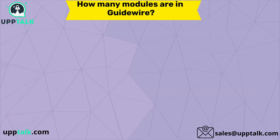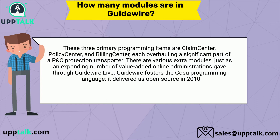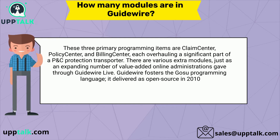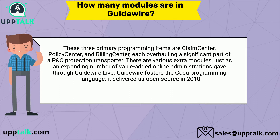How many modules are in Guidewire? The three primary modules are Claim Center, Policy Center, and Billing Center, each serving a significant part of a P&C insurance carrier. There are also various extra modules, as well as an expanding number of value-added online services provided through Guidewire Live. Guidewire also developed the GOSU programming language, which was released as open source in 2010.